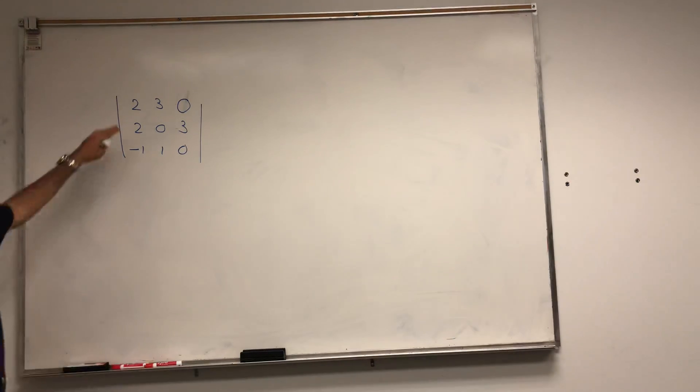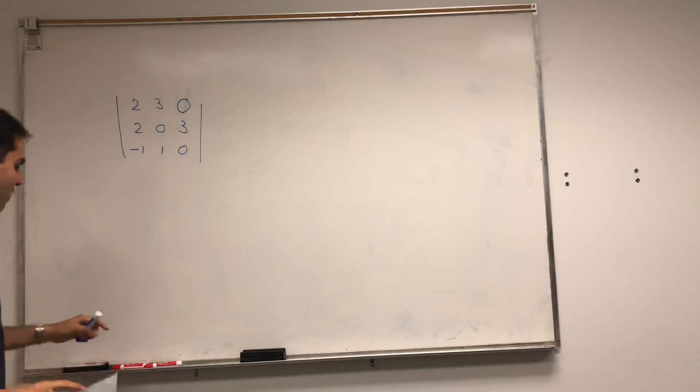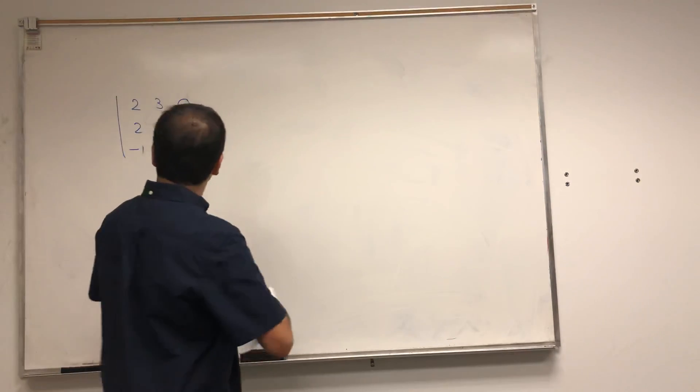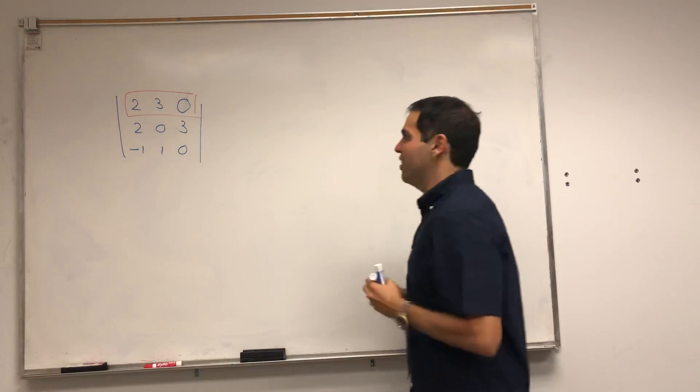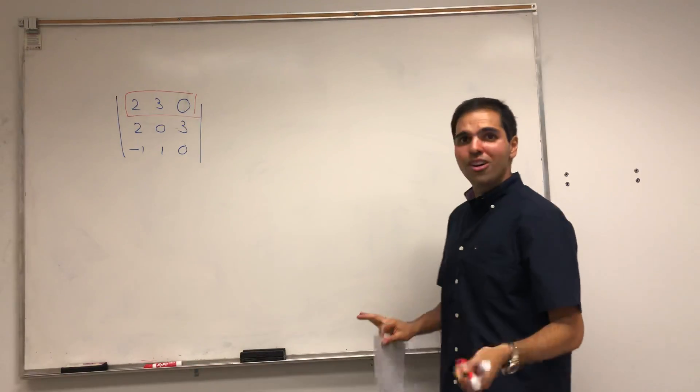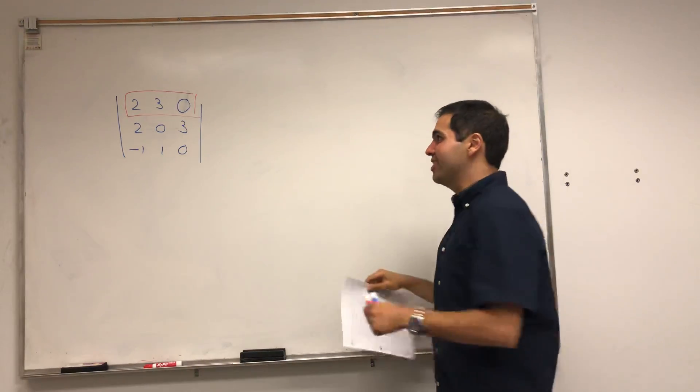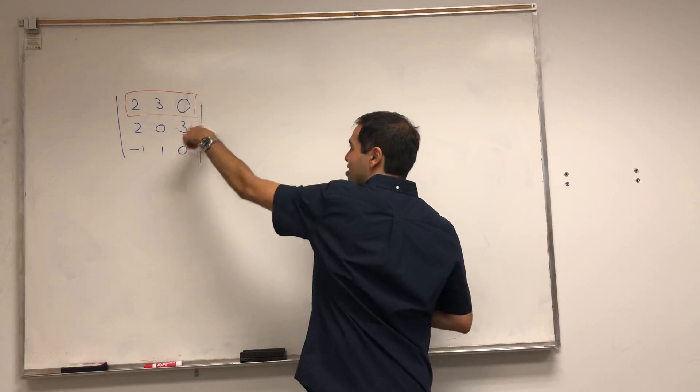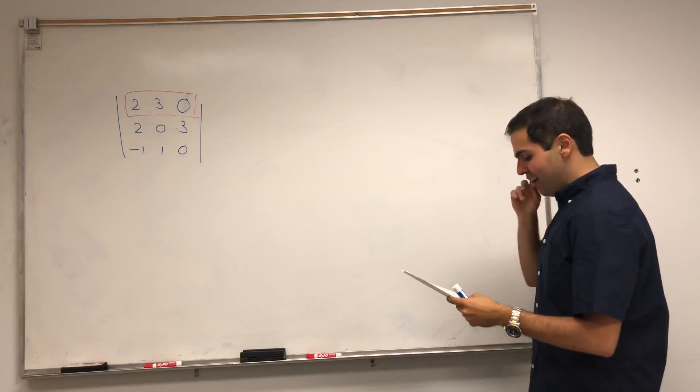So how do you evaluate determinants? First of all, you gotta choose a row or a column to expand it at. And in this case, because it's the first example, let's just choose the first row. But in general, it's good to do stuff with lots of zeros. So in fact, a maybe more clever choice would be the third column. But here, let's just do it along the rows.